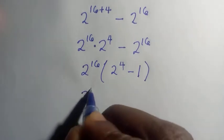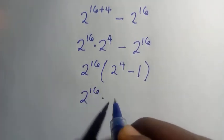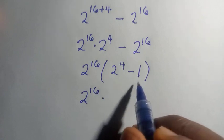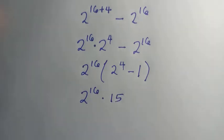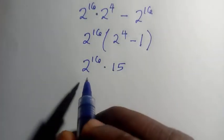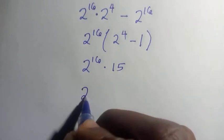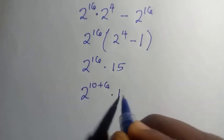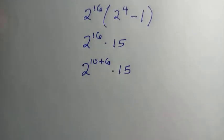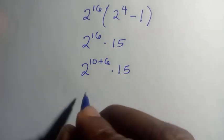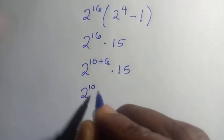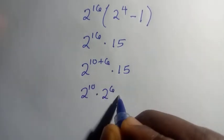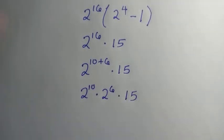So we have 2 to the power of 16, and 2 to the power of 4 minus 1 equals 15, giving us 2 to the power of 16 multiplied by 15. We can also write 2 to the power of 16 as 2 to the power of 10 plus 6, which equals 2 to the power of 10 multiplied by 2 to the power of 6, multiplied by 15.